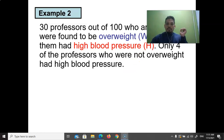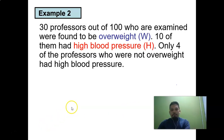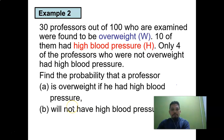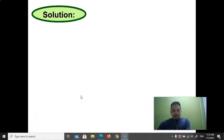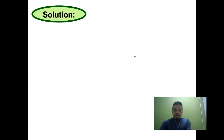Example two: 30 professors out of 100 who were examined were found to be overweight. Ten of them had high blood pressure. Only four professors who were not overweight had high blood pressure. Let's extract all this information and put it into a simple table.